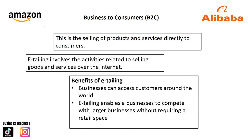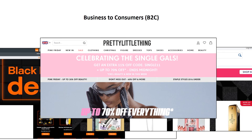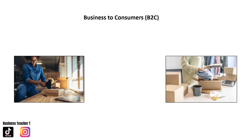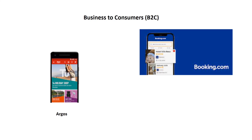There are benefits to e-tailing: businesses can access customers around the world, and e-tailing enables businesses to compete with larger businesses without requiring retail space. Most big retailers now have online services. Some small businesses may lack the finance to build and maintain a website, so they use more established platforms such as Amazon, Etsy, and eBay to sell directly to consumers. The use of apps to purchase products and services has also been on the increase, with retailers offering incentives such as discounts if consumers download the app to make purchases.